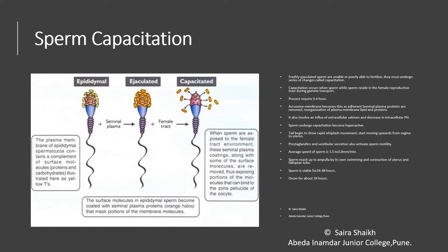Because of capacitation, the sperm becomes hyperactive and begins to move rapidly into the female genital tract, moving upward from the vagina to the uterus. The prostaglandins and the vestibular secretions also activate the sperm for its motility. The speed of the sperm is about 1.5 to 3 mm per minute. The sperm now reaches the ampulla of the uterine tube by its own swimming as well as because of the contraction of the uterus and the fallopian tube. The sperm is active for about 24 to 48 hours in the ampulla region.